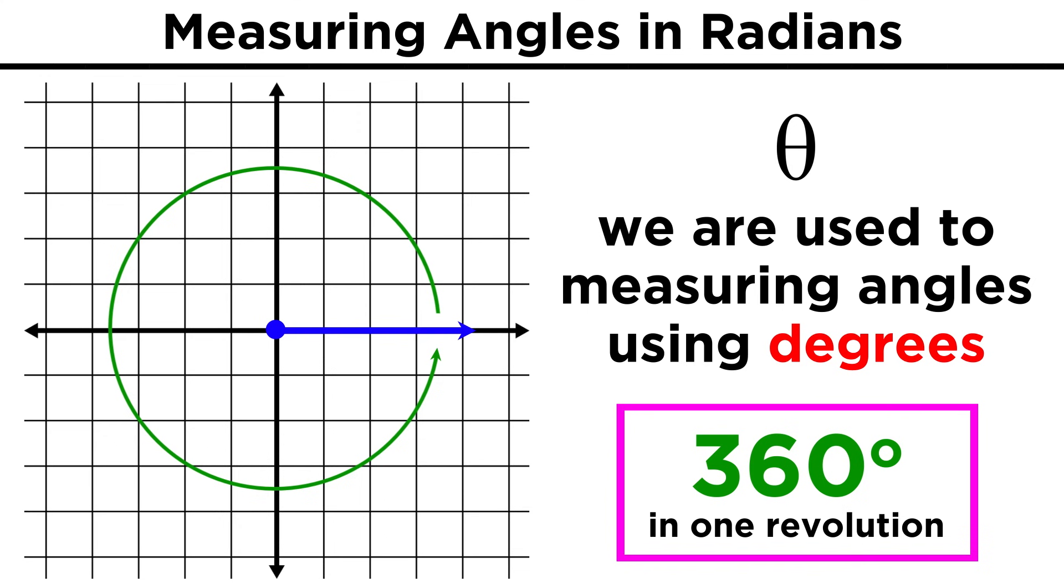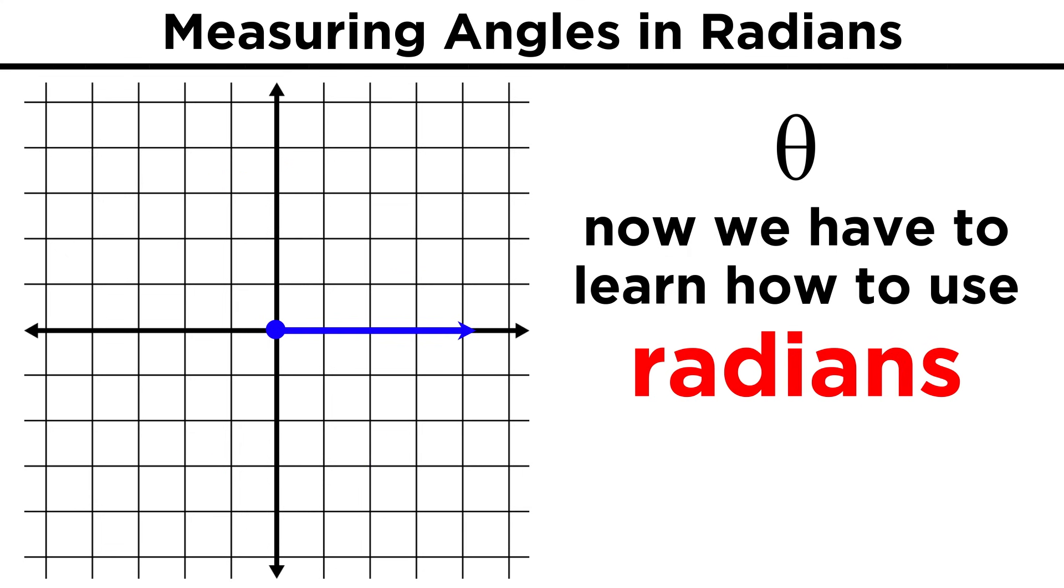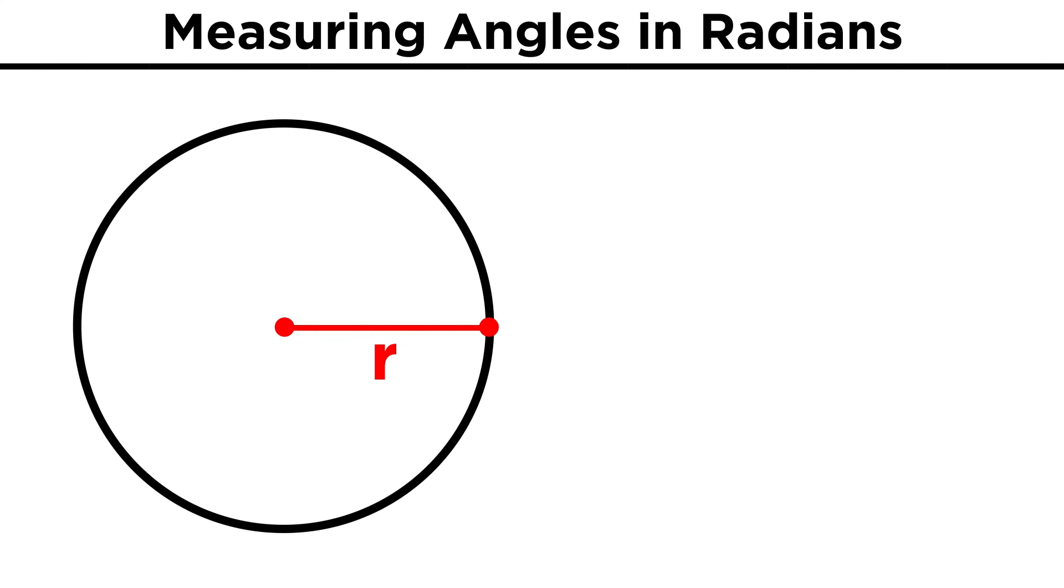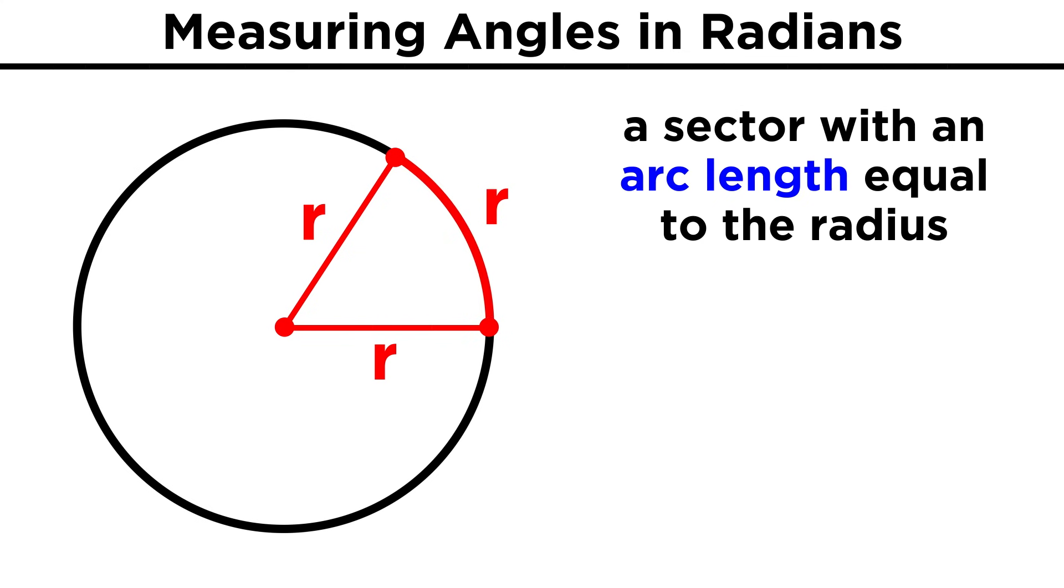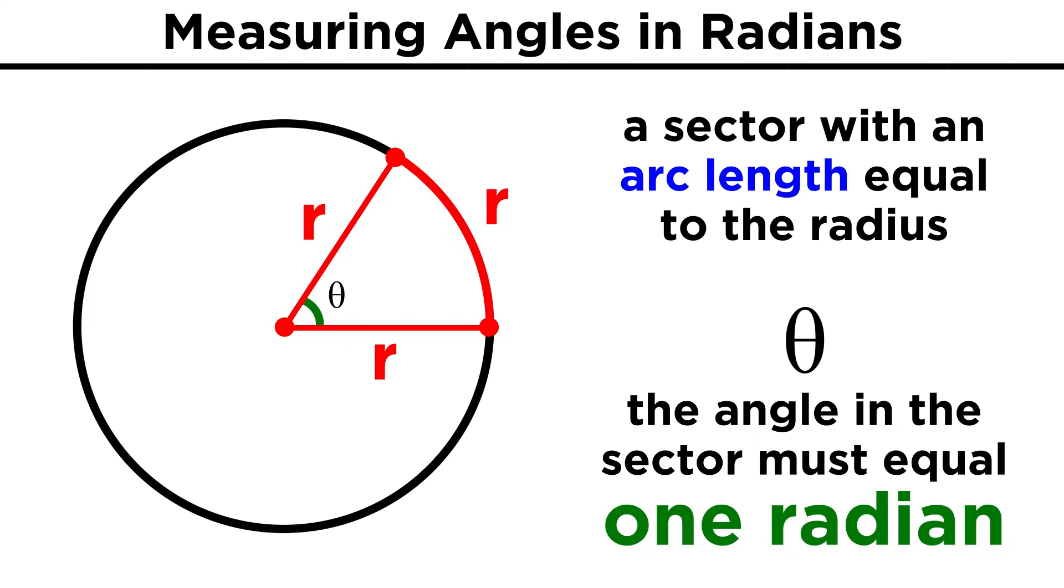But now it's time to learn another way to measure angles. Instead of degrees, we can use radians. But what's a radian? Well if we have a circle of radius R, and we take two radii to form a sector whereby this arc that connects the endpoints of the radii also has a length of R equal to the radii, the angle between the radii will be one radian.